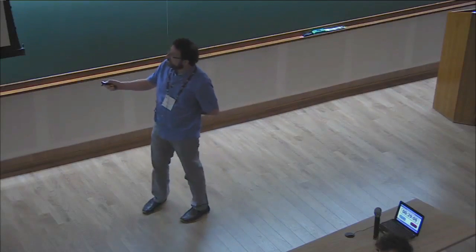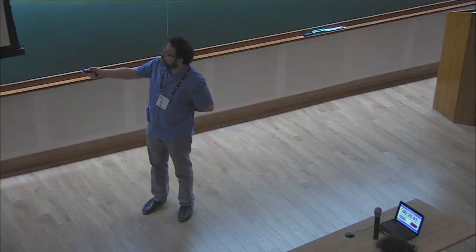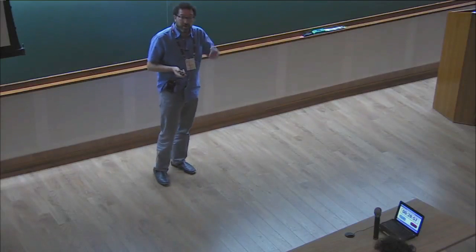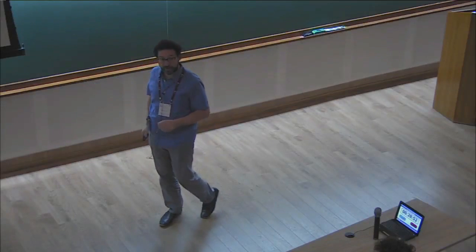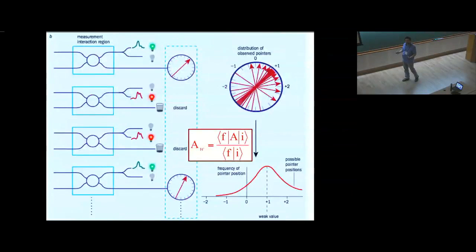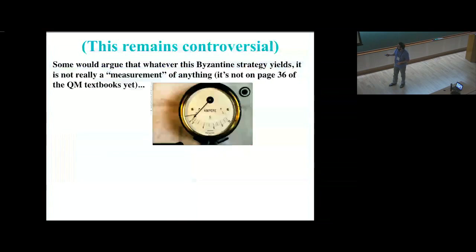This is called the weak value because of the weak measurement. And you see that it's related in structure to an expectation value. A is sandwiched between two states. But now they're the initial and final states. So this depends equally, almost symmetrically, on the preparation and the post-selection. And it has to be normalized by the overlap, which is what gives rise to a lot of the odd features of weak values. But this has a lot of beautiful mathematical properties that make it an interesting thing, to me at least, to study in terms of what it teaches us about the underlying physical reality.